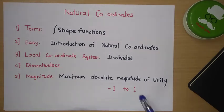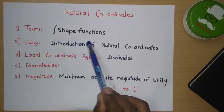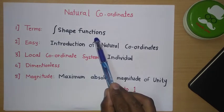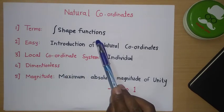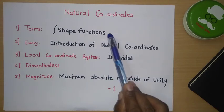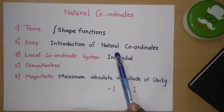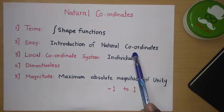Today we are going to see about natural coordinates and why we use them. In finite element analysis, there are many terms which are calculated using integration of shape functions. The shape functions have different powers. It is relatively easy to calculate integration of shape functions having XYZ coordinates, but it is much easier if we have shape functions in the form of natural coordinates. That's why we use natural coordinates.